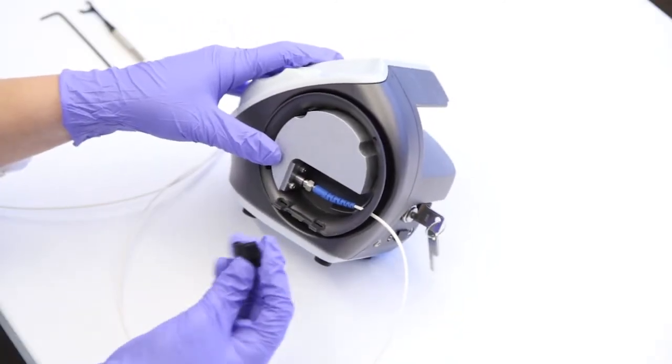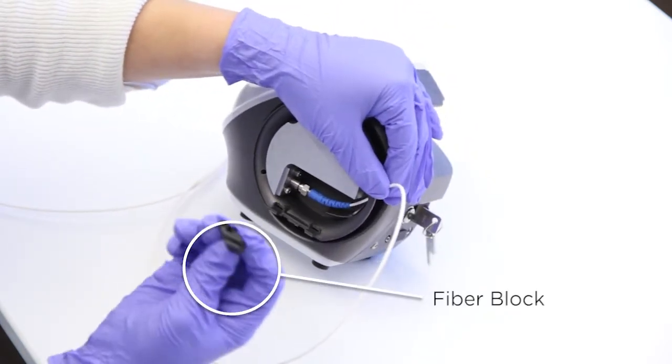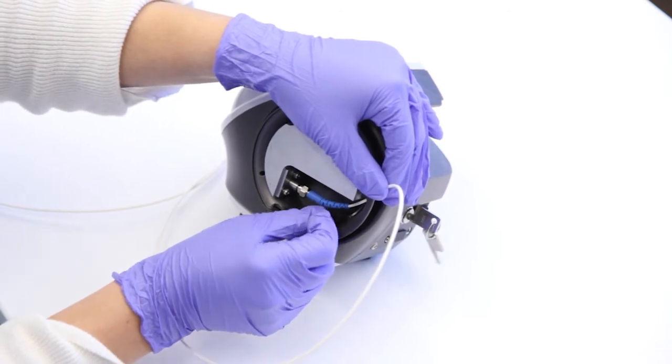Once installed, gently lift the fiber strain relief and carefully slide the fiber block back into place between the fiber strain relief and onto the fiber guide ramp holding up the fiber.